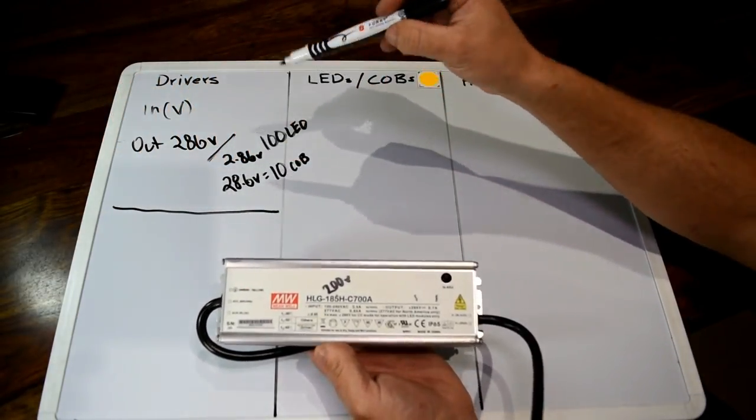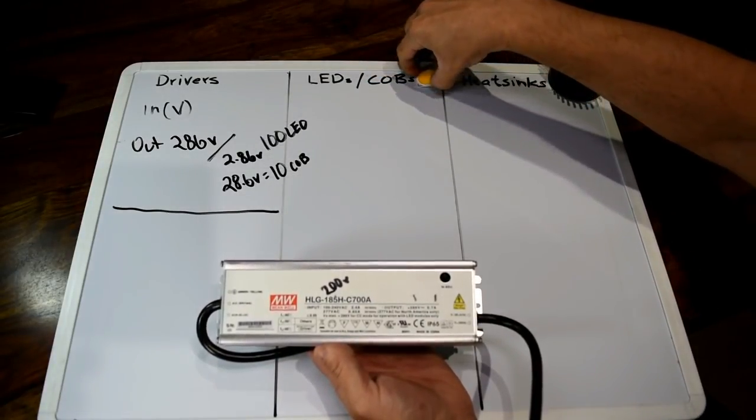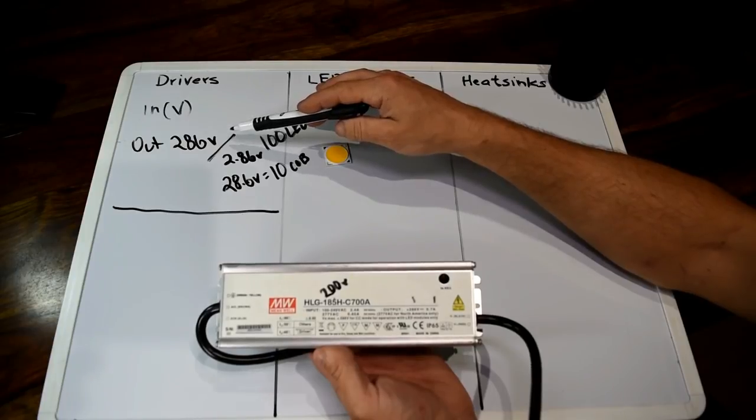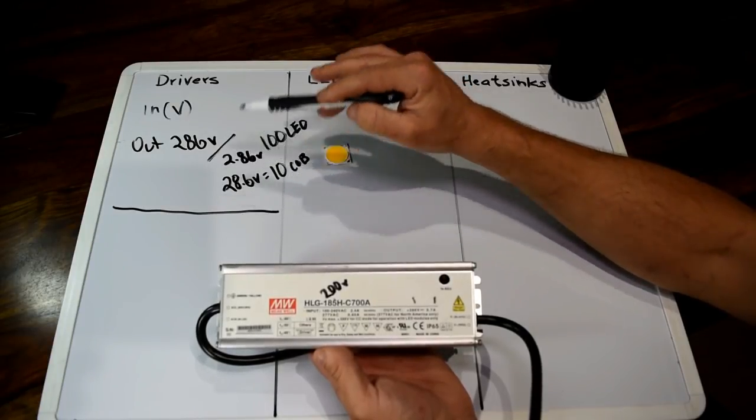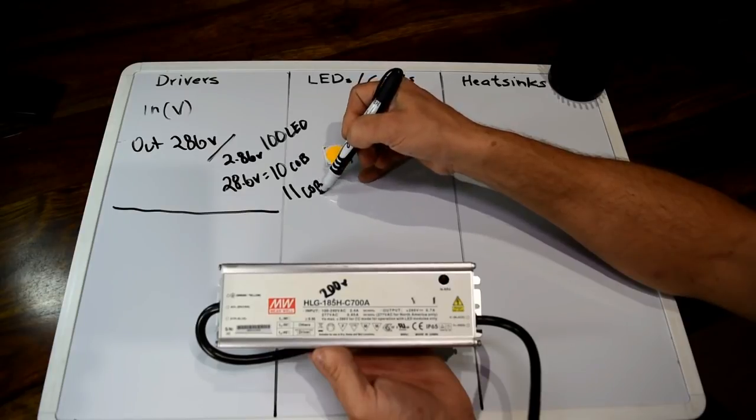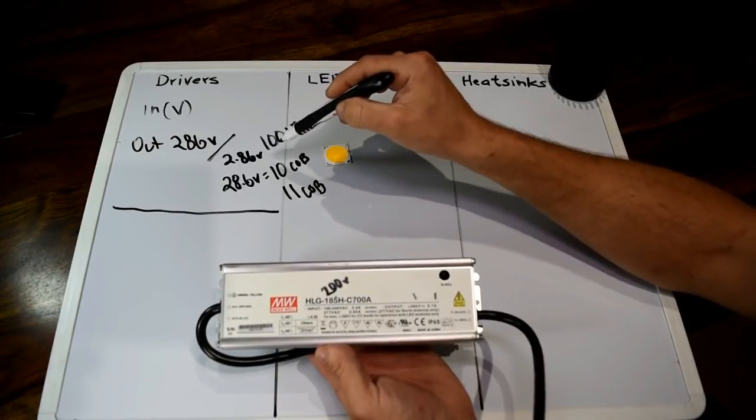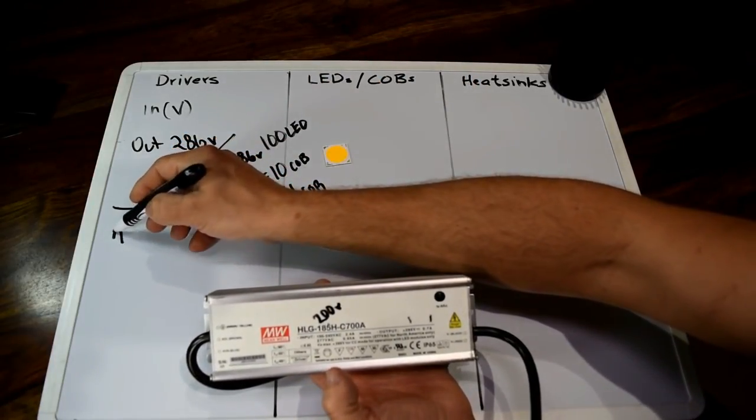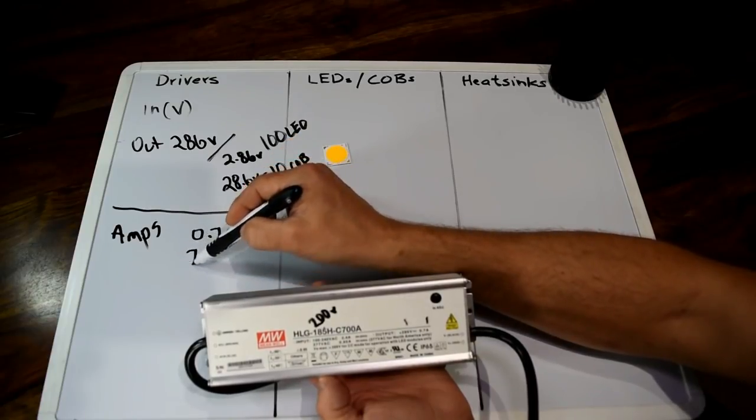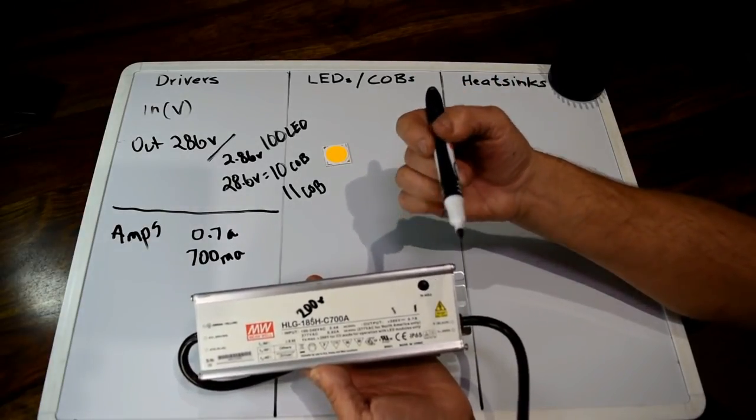When you're dealing with drivers and turning LEDs on, if you have a string of LEDs wired in series, if you don't have enough voltage to run all 10 LEDs, then none of them will turn on. For example, if we had a string with 11 COBs on them, none of them would turn on because there's not enough voltage to get back to the driver. That's pretty important.